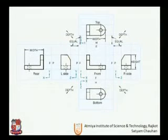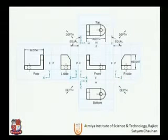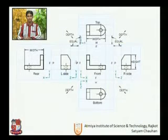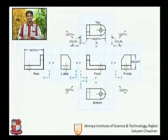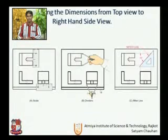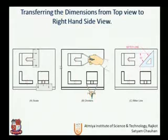We saw the particular position of each and every view — starting from front, plan, bottom, then left, right, side view, and rear view. We covered how height is used in the front and side views, and how depth is used to obtain the top and bottom views. We also saw how to draw the orthographic projection using three methods.